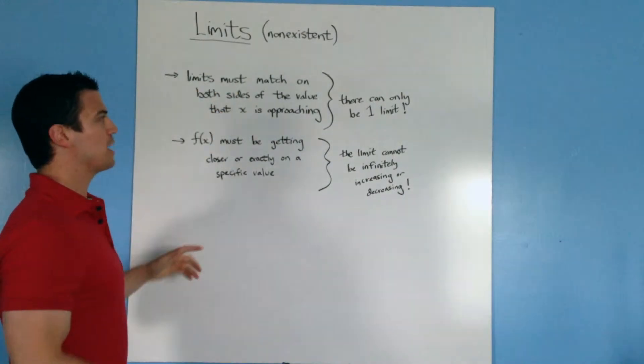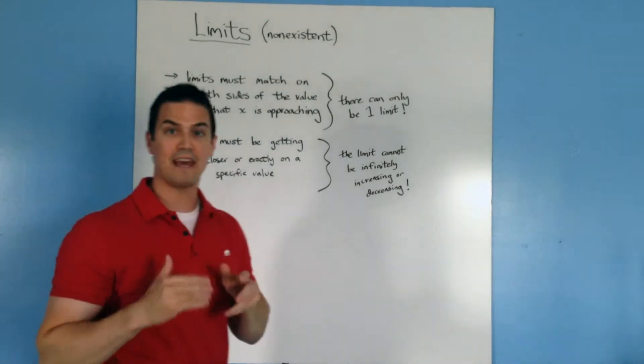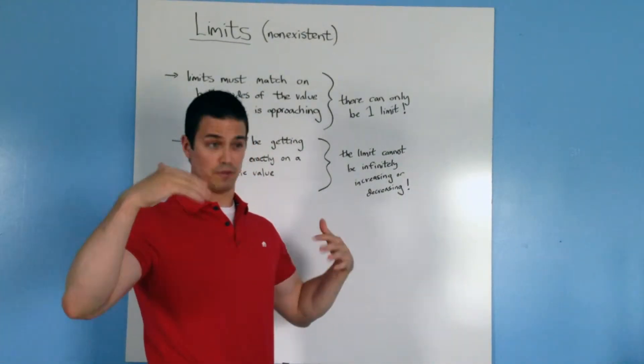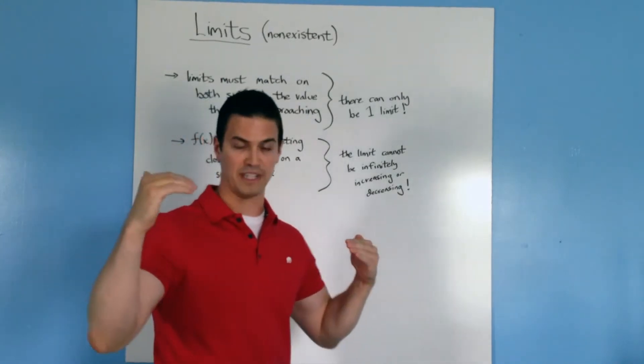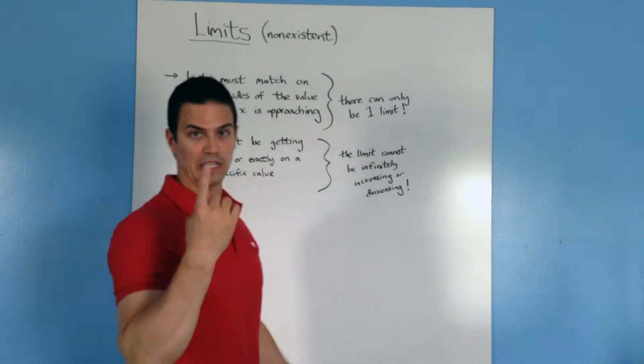First one, limits must match on both sides of the value that x is approaching. So if x is approaching zero, both sides of the function need to be approaching that one value for there to be a limit. In other words, there can only be one limit.